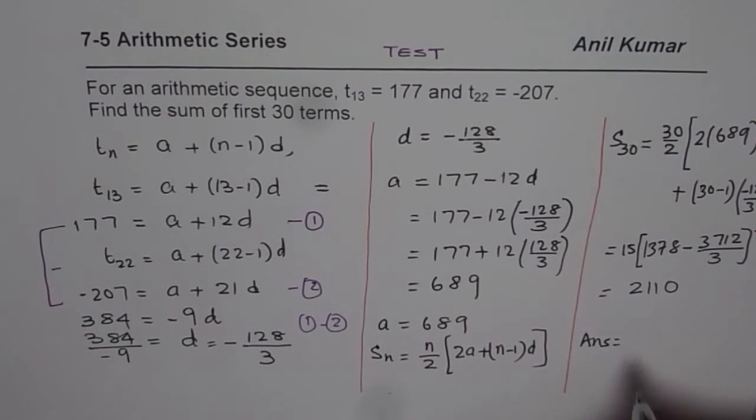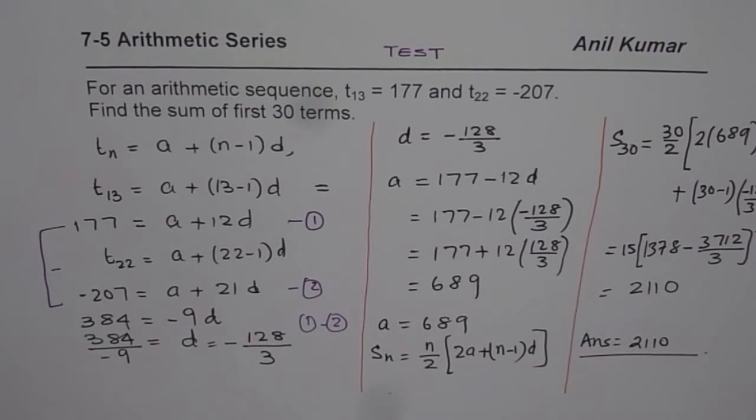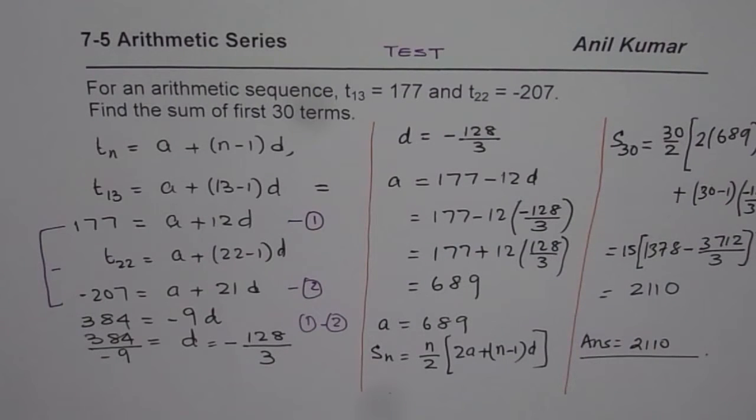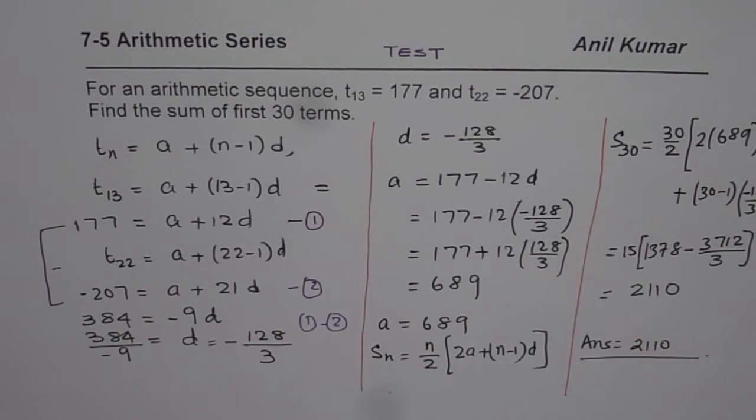So that's how we should be doing these kinds of questions. We have 2110 as the sum of first 30 terms. I hope you understand and appreciate the method: first find the first term and common difference, then apply the formula for sum. Thank you and all the best.